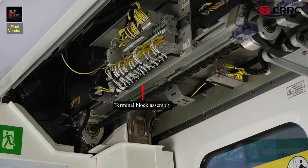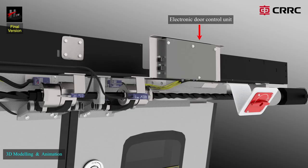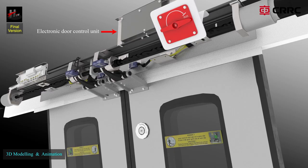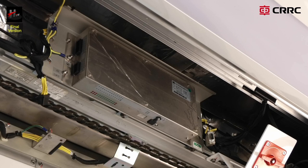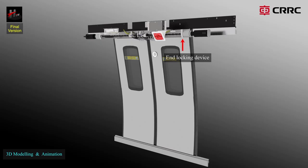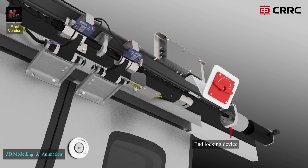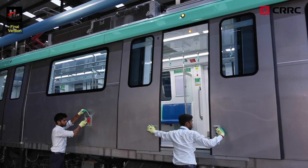The terminal block assembly and the electronic door control unit: the EDCU is assembled on the mounting base of the load carrying mechanism. It is equipped with a microprocessor that controls the communication between the door system and the TCMS. The door system is controlled according to the internal and external information received from the EDCU. The end locking device is found at one end of the spindle shaft and provides end support to the spindle shaft. It is also connected to the Bowden cable of the EED and the EAD, and helps in the emergency unlocking of the saloon doors.